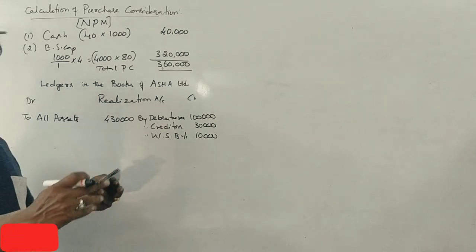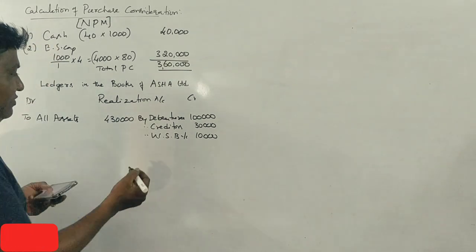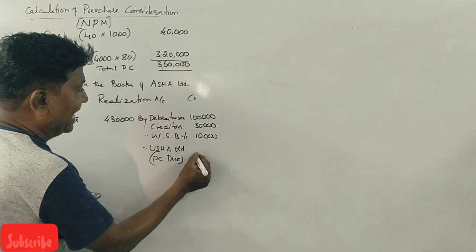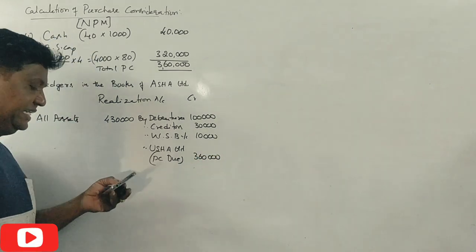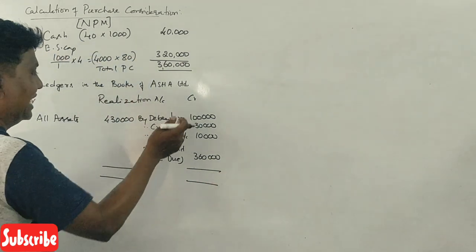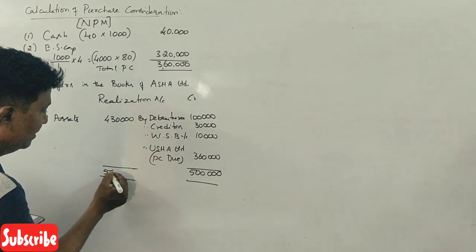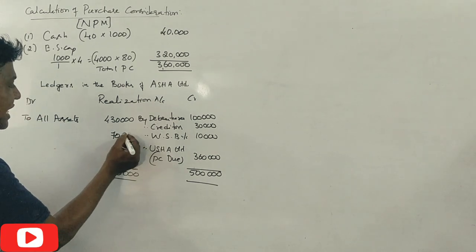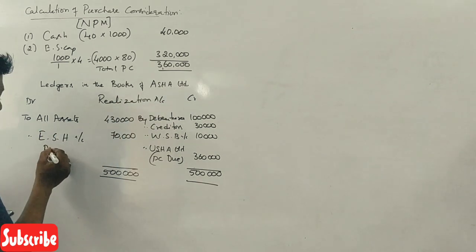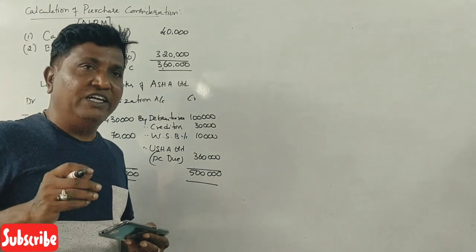We have bought assets of Rs.4,30,000 and assumed liabilities of Rs.1,40,000. The purchase consideration received is Rs.3,60,000 on the credit side. Total credit side is Rs.5,00,000, and total debit side is Rs.4,30,000. The balancing figure is Rs.70,000, which is a profit on realization. This profit goes to the equity shareholders.